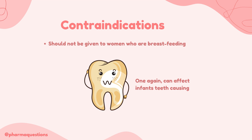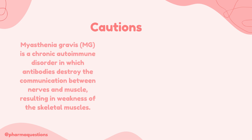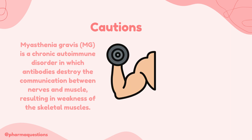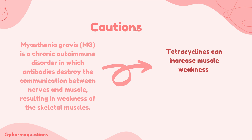Now let's take a look at some cautions of tetracyclines. Myasthenia gravis is a chronic autoimmune disorder in which antibodies destroy the communication between nerves and muscles, resulting in weakness of the skeletal muscles. Tetracyclines should be used with caution in people with myasthenia gravis as they can increase muscle weakness.